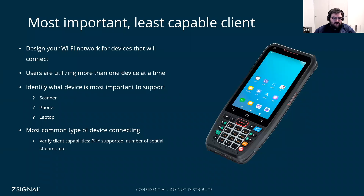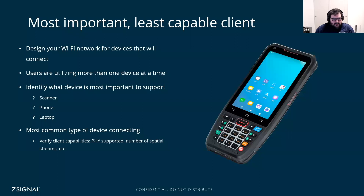As we know, most users these days have more than one device — in an office environment you can have one user with three or four devices connected at a time. So preparing for that capacity requirement and knowing what those clients are capable of is important. You need to know not only the PHY supported for your APs but also your clients, including the number of spatial streams the client has and how those work with the specific AP.